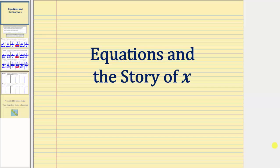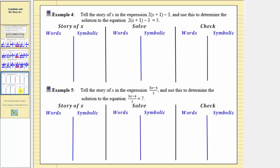Welcome back to part two of the lesson on equations and the story of x. In example four, we're asked to tell the story of x in the given expression and use this to determine the solution to the given equation. Notice the equation is two times the quantity x plus one minus three equals five.